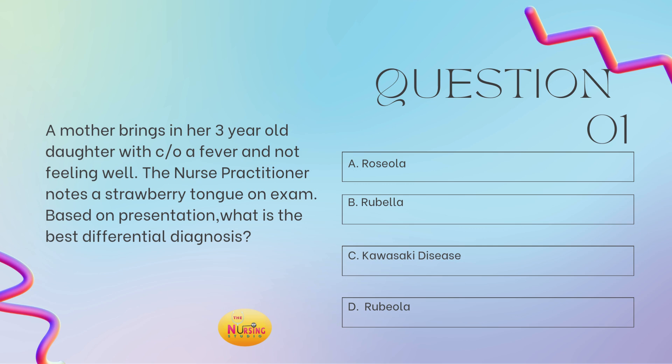I always recommend reading the stem of the question first, so it allows you to slow down and ensure that you're answering what is even being asked. So here, the stem of the question states: based on presentation, what is the best differential diagnosis? This patient is brought in by the mother — a three-year-old little girl with complaints of a fever and just generally not feeling well. The nurse practitioner notes a strawberry tongue on exam. When I say strawberry tongue, you should think Kawasaki disease. So the best differential here is C, Kawasaki disease.